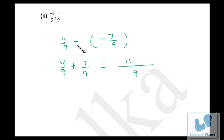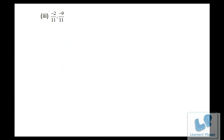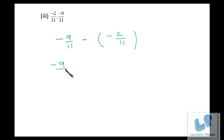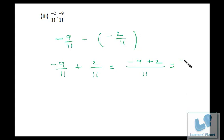Do not make a mistake here. If you have to subtract minus 7/9 from 4/9, we will be adding a negative sign, and it is minus 7/9. Now we have to subtract minus 2/11 from minus 9/11. So it's minus 9/11 minus of minus 2/11. Minus into minus will be plus and then it is 2/11. So minus nine plus two is minus seven, and that is over 11.